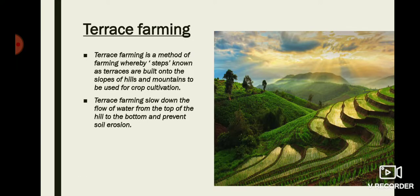Another way is terrace farming. It is an important agricultural method that has made farming possible in the mountainous parts of the world. For this type of farming, idle mountain fields or regions become productive. The word 'terrace' means steps, so terrace farming is a method of farming by cutting down hill slopes step by step and cultivating crops there.